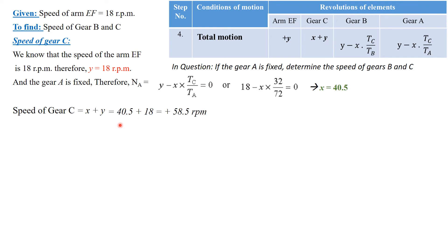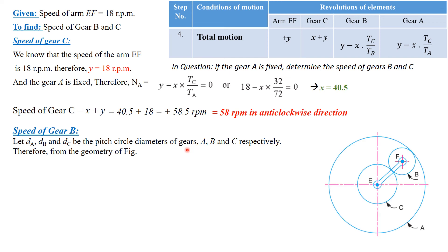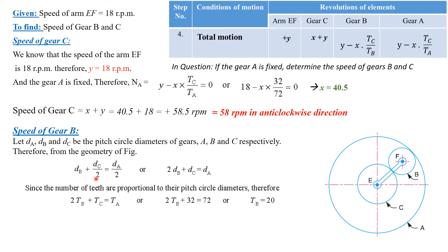With x and y found, the total speed of gear C is x + y = 40.5 + 18 = 48.5 rpm in the anticlockwise direction. For gear B, the equation is y − x(Tc / Tb). We know x, y, and Tc, but we still need to find Tb.